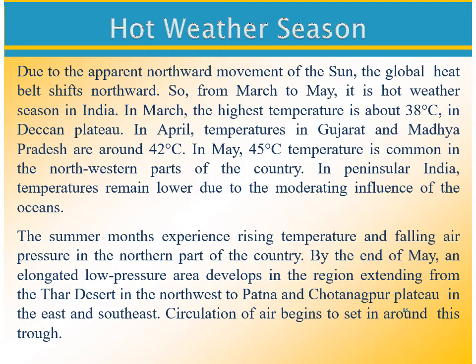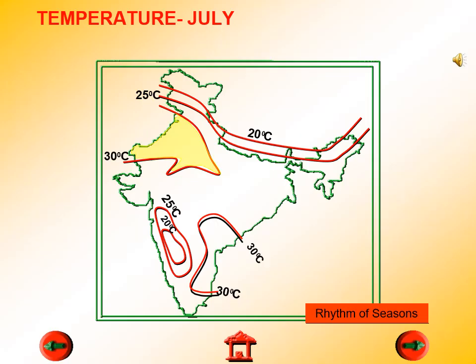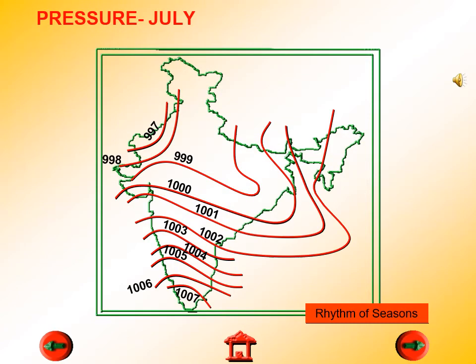The summer months experience rising temperature and falling air pressure in the northern part of the country. By the end of May, an elongated low pressure area develops in the region extending from the Thar Desert in the northwest to Patna and the Chotanagpur Plateau in the east and southeast. Circulation of air begins to set in around this trough, as shown on the temperature and pressure range map for end of May through June and July.